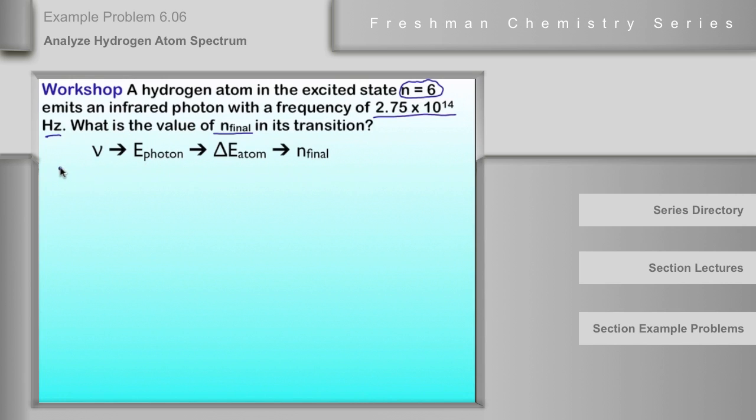So let's start off and say E of the photon is equal to negative delta E of the atom. The atom loses the energy that creates the photon.